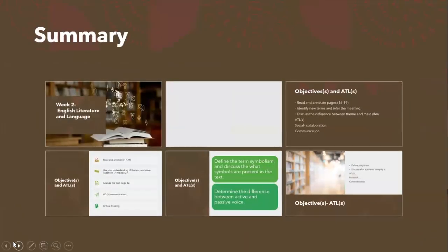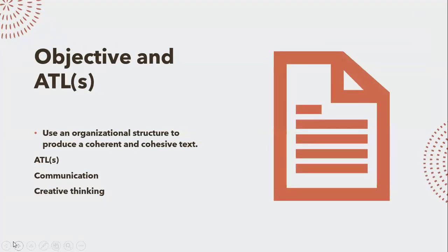To begin with, the first lesson will focus on the following. You will use an organizational structure to produce a coherent and cohesive text. You will all perform a pretest. This pretest aims to assess your ability to construct a cohesive and coherent text in a way that ideas build up on each other smoothly and the message and intent behind each paragraph is clear. This pretest is not graded — it is for us to know your areas of strength and weakness, and for you to reflect upon them.